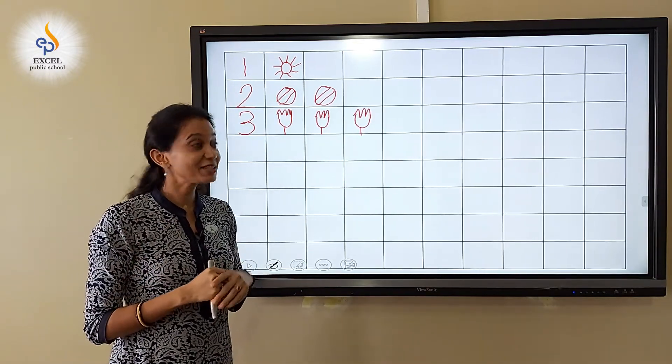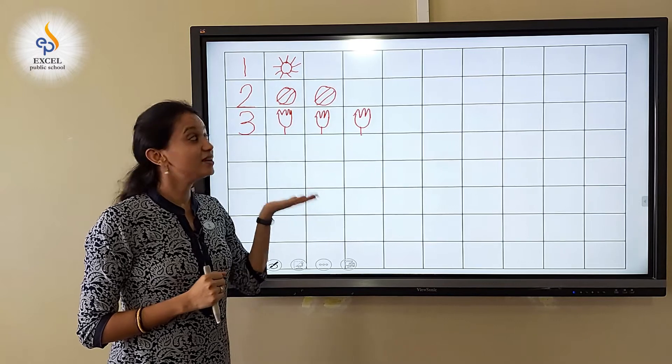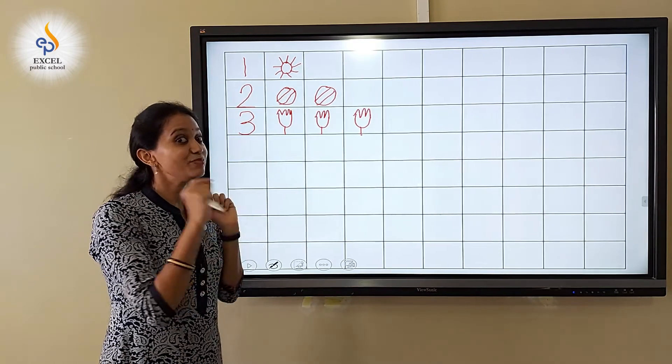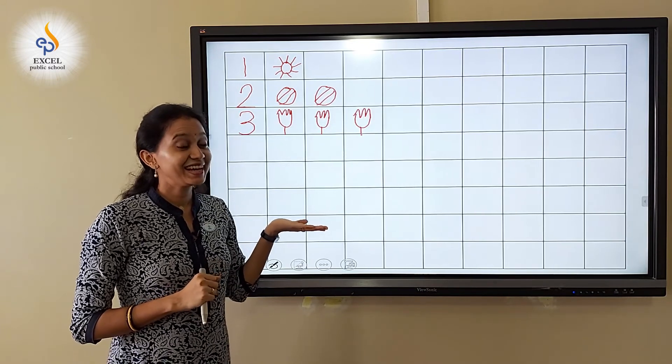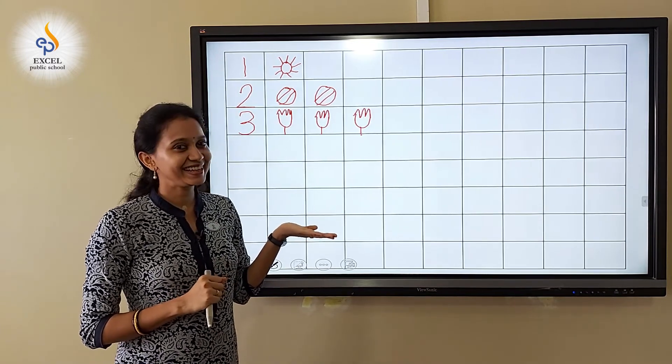Children, we learnt how to write number three inside the box. Square box. Isn't it? Enjoy writing! Bye-bye!